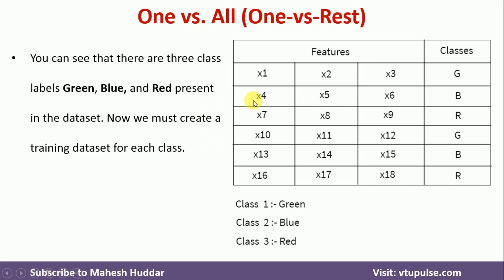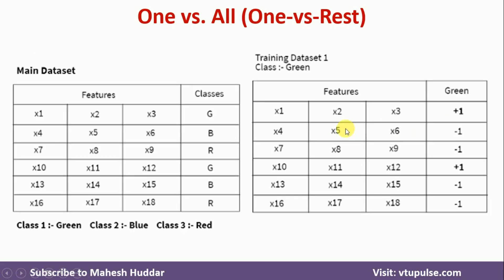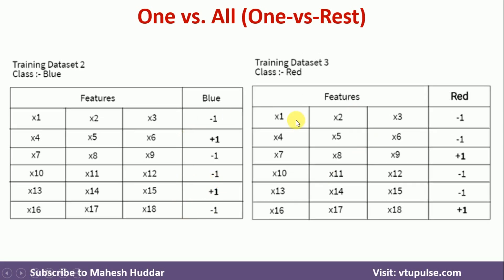Let me take a simple example with three feature columns and class labels green, blue, and red. In the first classifier model — green versus all — wherever the class is green we put 1, and wherever it is blue or red we put minus 1, giving us only two classes. In the second classifier — blue versus all — wherever there is blue we put 1 and everywhere else minus 1. In the third classifier — red versus all — we put 1 for red and minus 1 everywhere else. We then build the classifier models on each of these training datasets.